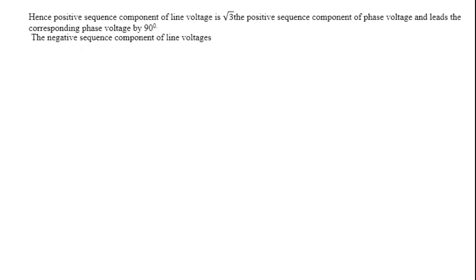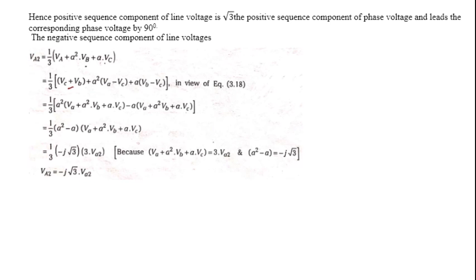Similarly, for the negative sequence component of the voltages, VA2 is written as (1/3)(VA + A²·VB + A·VC). Substitute: VA is VC minus VB, VB is VA minus VC, and VC is VB minus VA. After substitution, the common factor becomes A square minus A.